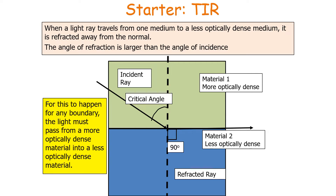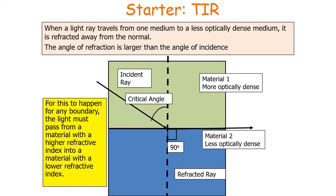For this to happen at any boundary, the light must pass from a more optically dense medium into a less optically dense medium — that is, from a material with a higher refractive index to a material with a lower refractive index. So n1 must always be greater than n2.